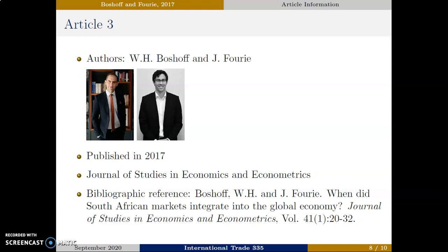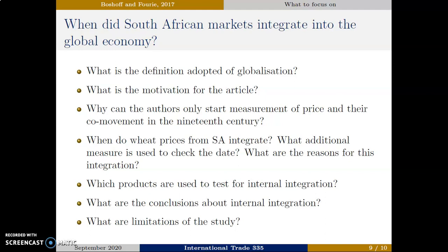The third article focuses specifically on South Africa and is written by two professors at the University of Stellenbosch, Willem H. Bossoff and Johan Furin. As mentioned in the introduction, there are relatively few studies on Africa's trade history. This is one of them, published in 2017 in the Journal of Studies in Economics and Econometrics, which has an impact factor of only 0.145. Some questions to focus on when reading this article: What is the definition of globalization adopted by the authors? What is the motivation of the article — why did the authors decide to write it? Why can the authors only start measurement of prices in the 19th century, and why did they choose wheat prices? When did wheat prices from South Africa integrate into the global economy, and what additional measures do the authors use to check if the date is correct?